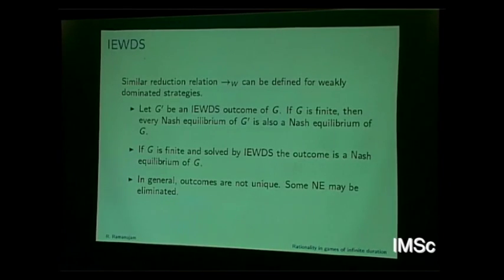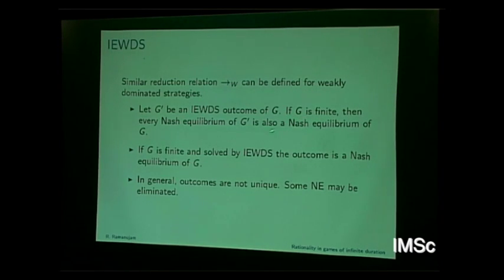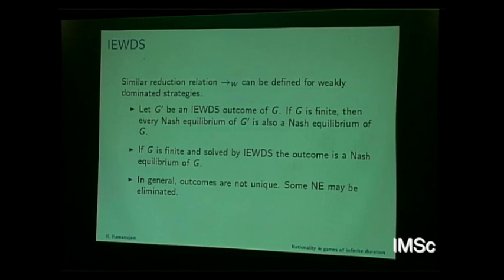Now let's get to weak dominance. In general you can define a reduction relation for weak dominance — very similar to the strict case. If G prime is an outcome of removing weakly dominated strategies, for finite games you can show that whatever is the new Nash equilibrium in the new game, it is a Nash equilibrium of the original game, but the converse is not true even in finite games. If G is finite and solved by IEWS — you eliminated weakly dominated strategies and luckily ended up with singletons — it is a Nash equilibrium. But even in this case, outcomes are not unique and some Nash equilibria can in fact be eliminated.